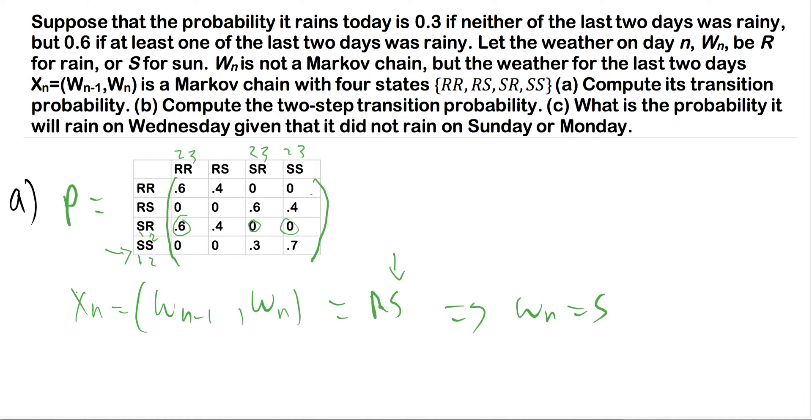So all we're saying here is that since XN+1 equals (WN, WN+1), this has to equal S and then something, because we already have WN equals S. So then this WN here has to equal S. And now WN+1 can either be R or S. And this will actually come in handy at part C.